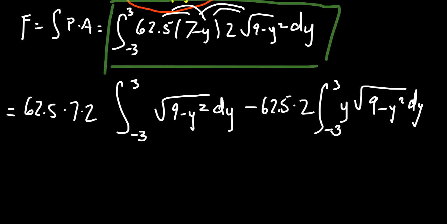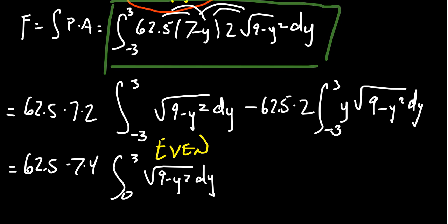Let's look at these two integrals. This first one is going to be an even function. This function is symmetric with respect to the y-axis, or the x-axis in this case. This is just the graph of a semicircle. You're going to get even symmetry there. And as such, you actually get 62.5 times 7 times 4 as you integrate from 0 to 3, the square root of 9 minus y squared dy.